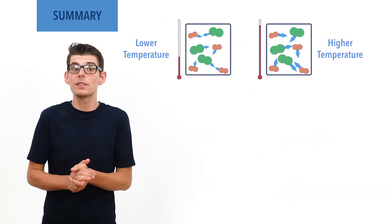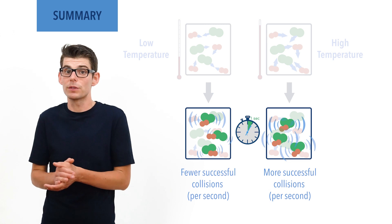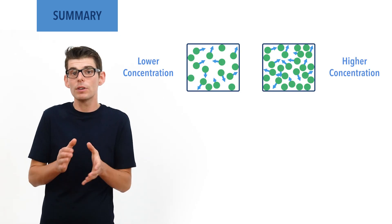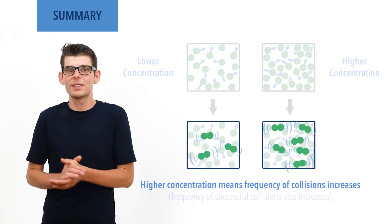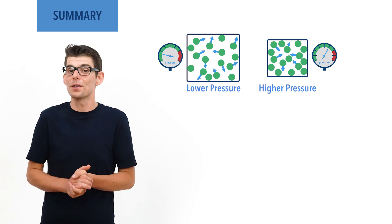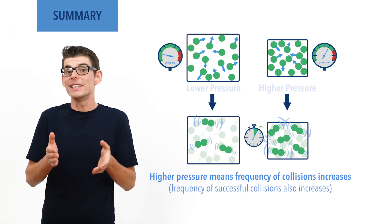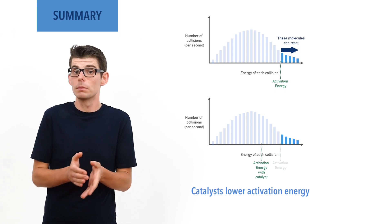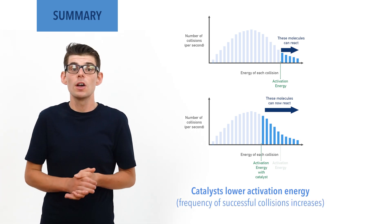Increasing temperature increases the average kinetic energy of particles, meaning a greater proportion of collisions are successful, increasing the frequency of successful collisions. Increasing concentration of reactants means there are more particles in a smaller volume, increasing the frequency of all collisions between particles, meaning the frequency of successful collisions also increases. Increasing the pressure of a gas system has the same effect as increasing concentration, also increasing the frequency of all collisions. Decreasing the activation energy for a reaction by using a catalyst means a greater proportion of collisions become successful — the same frequency of collisions overall, with more that are successful, means an increase in the frequency of successful collisions.